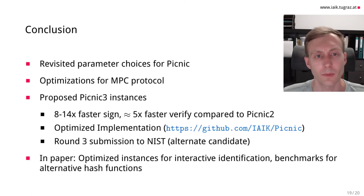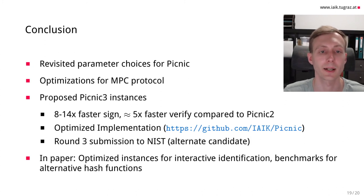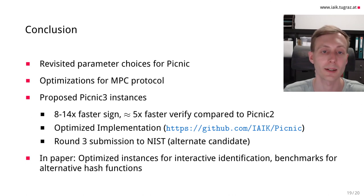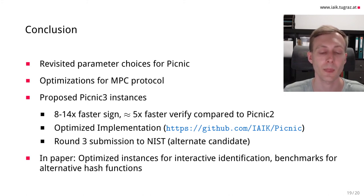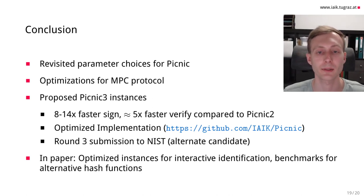In conclusion, we revisited the parameter choices for the Picnic signature scheme, presented optimizations for the MPC protocol, and proposed new Picnic3 instances. These Picnic3 instances provide 8 to 14 times faster signing times and about 5 times faster verification than previous Picnic2 instances, while the signature size is very comparable at around 2% larger. These Picnic3 instances are implemented in the optimized implementation available on GitHub, and are also part of the round 3 submission to NIST, where Picnic has advanced as an alternate candidate in the signature category.